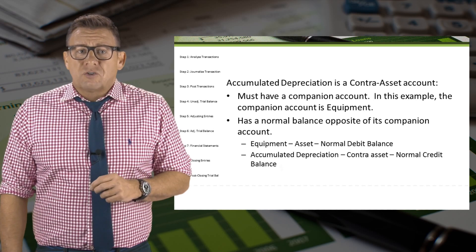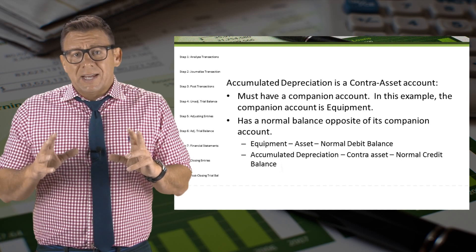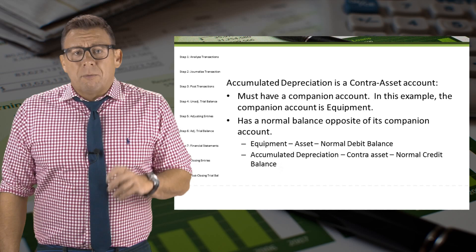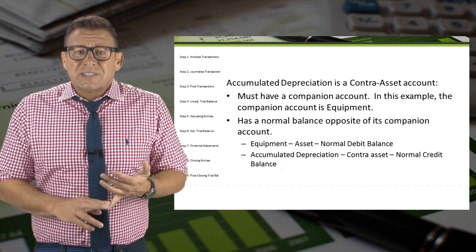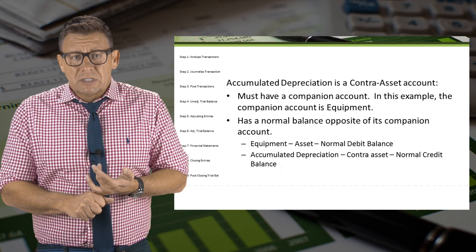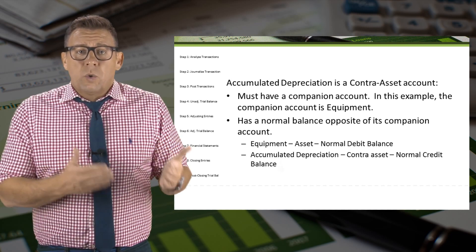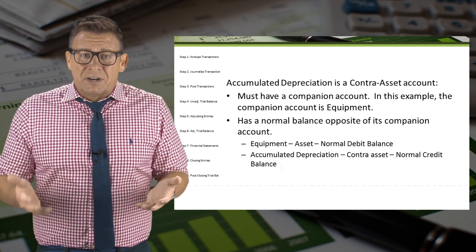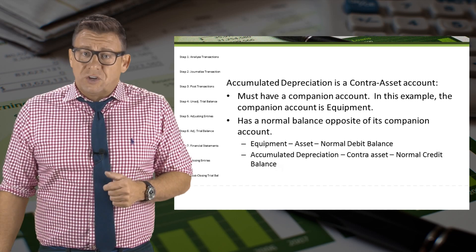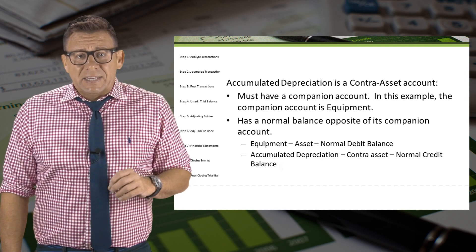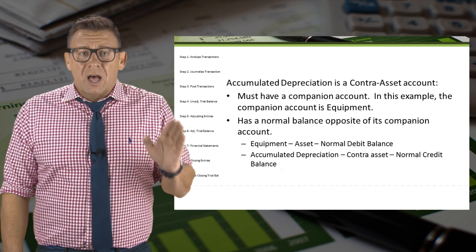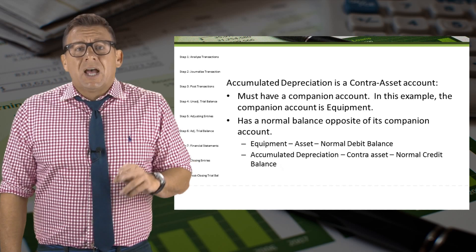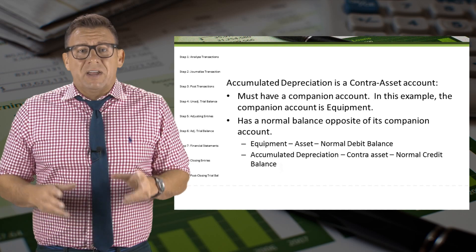This won't be the only contra-account you learn, so let's define what makes an account contra. A contra-account must meet two criteria. The first is that it must have a companion account — in this example, the companion account is equipment. If we never owned any equipment, we would never have an account called accumulated depreciation for equipment. The second is that it has a normal balance opposite its companion account. Since equipment has a normal debit balance, accumulated depreciation must have a credit balance.